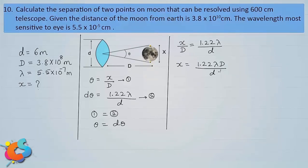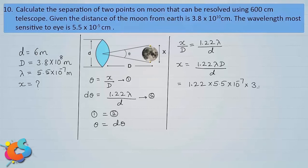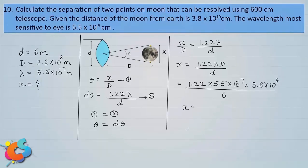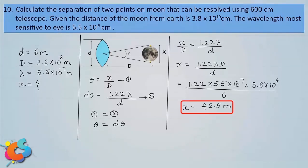Substituting values: x = 1.22 × 5.5 × 10⁻⁷ × 3.8 × 10⁸ / 6. On simplification, x = 42.5 meter. That is the distance between the two points on the surface of the moon that can be just resolved.